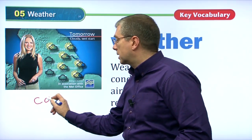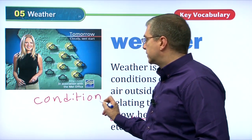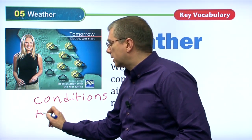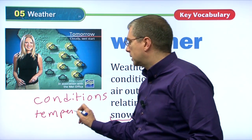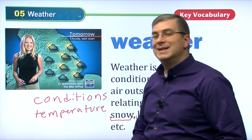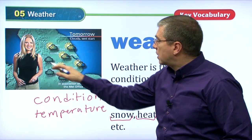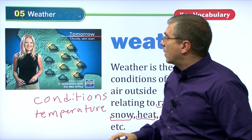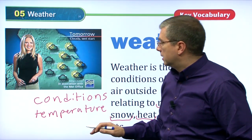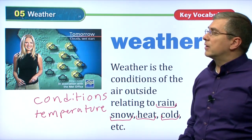One thing we're talking about are conditions — for example, rain, snow, sunny conditions. We're also talking about the temperature. That's a long word: temperature. As you can see, this is a weather forecaster and she's talking about the different weather conditions in different parts of the country. Looks like this is Britain — England. So this is weather and she's a weather forecaster.